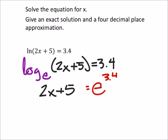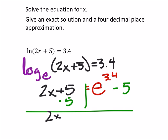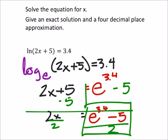So to solve this, I would subtract 5 from both sides of the equation. And I've got 2x equals e to the power of 3.4 minus 5 now. And then finally, to solve for x, I would divide everywhere by 2. So this is my exact answer.